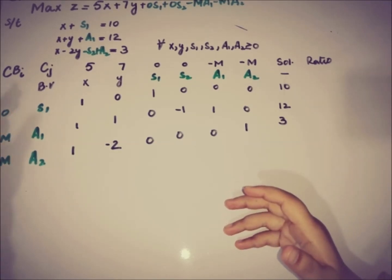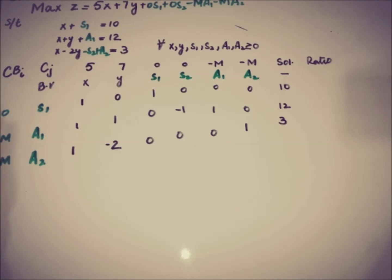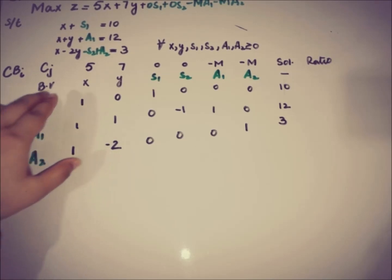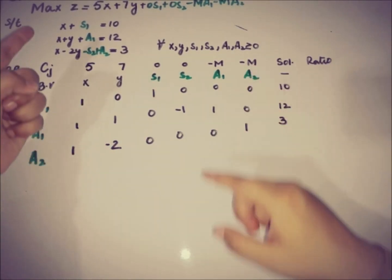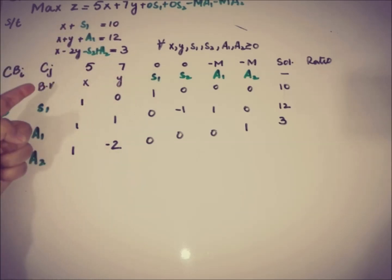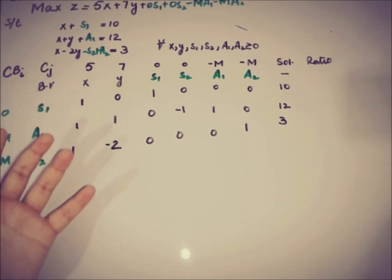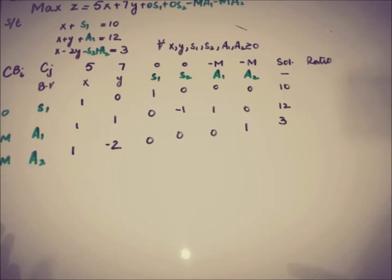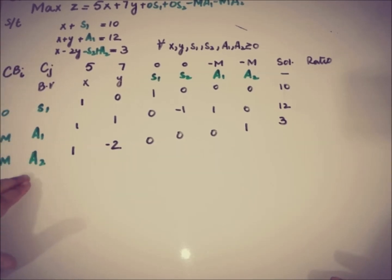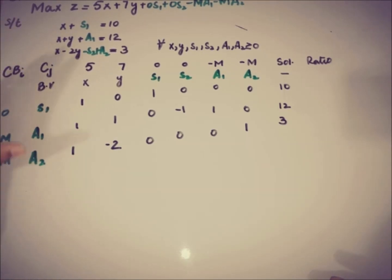In the initial table, CBI is the coefficient of the basic variables in the objective function, and CJ contains the coefficients of the non-basic variables: 5, 7, 0, 0, -M, -M. The basic variables are S1, A1, and A2. Where we deal with an artificial variable alongside a surplus variable, we take the artificial variable — A2 from the third constraint, A1 from the second constraint, and S1 from the first constraint.